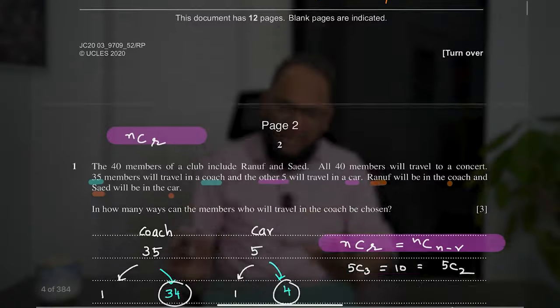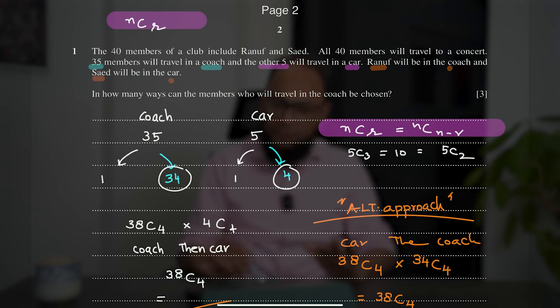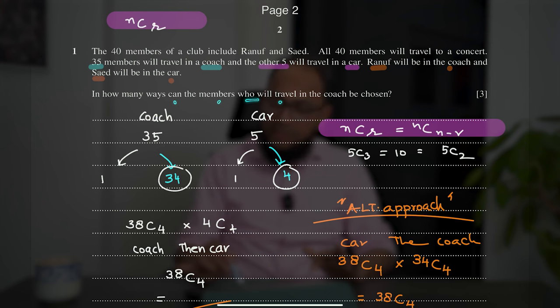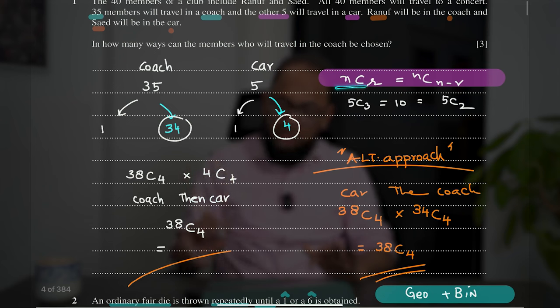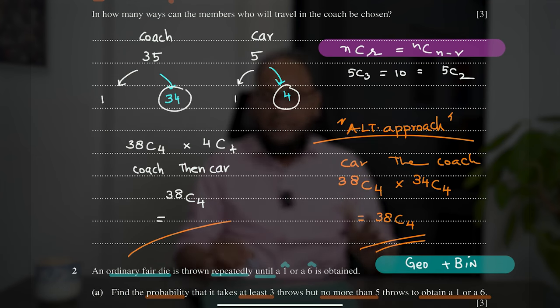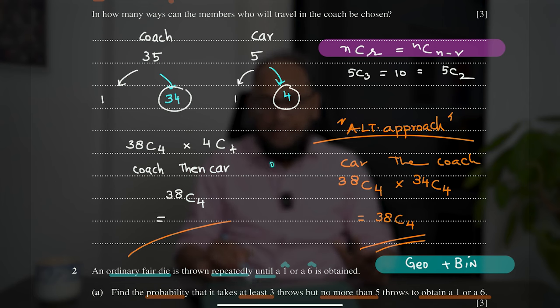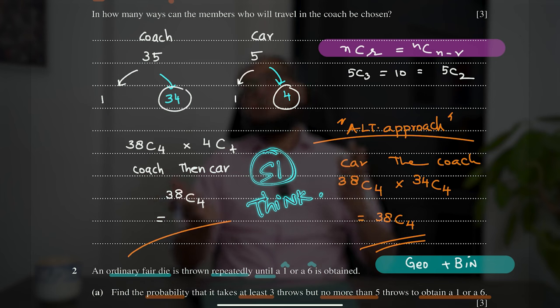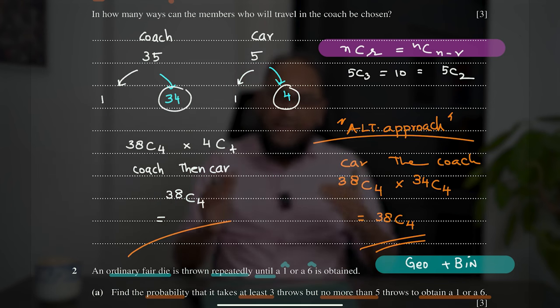Looking at the paper: Question 1 is about combinations (NCR). A club of 40 members must travel to a concert — 35 by coach, 5 by car, with specific constraints on two named members. The question asks in how many ways the coach travellers can be chosen. The working isn't extensive for 3 marks, but it requires careful thinking — a trademark of S1 where thinking takes priority over lengthy working.